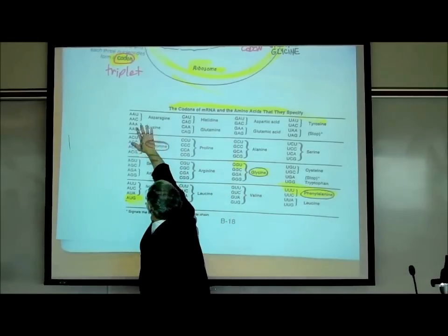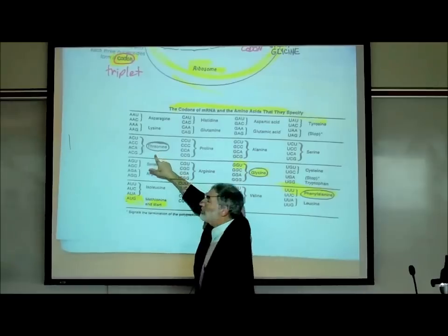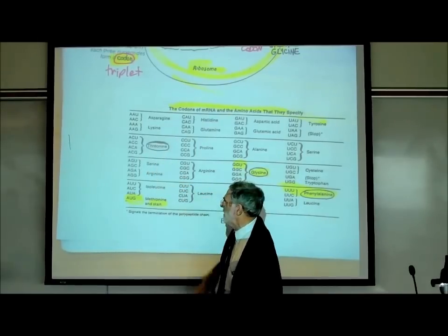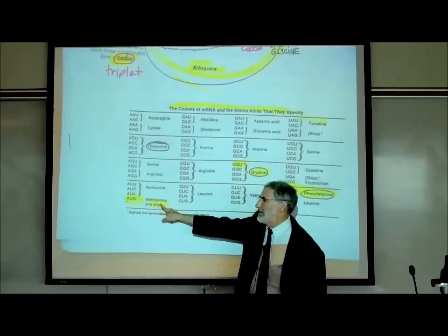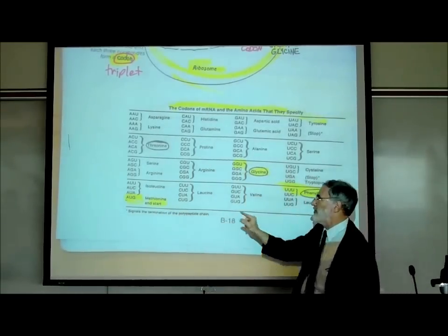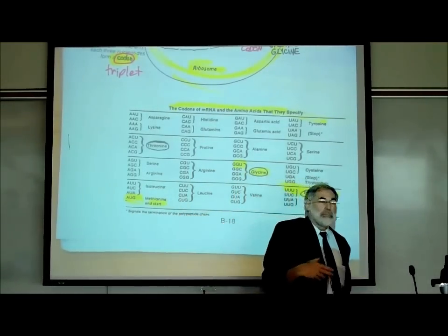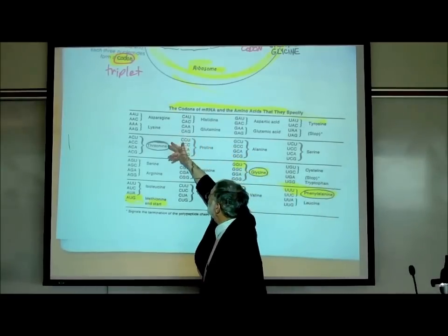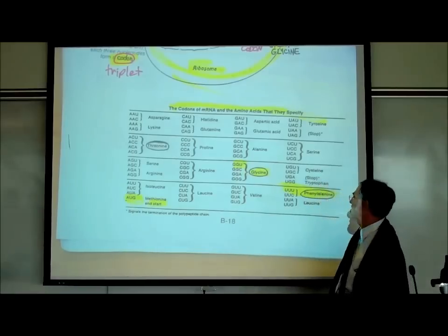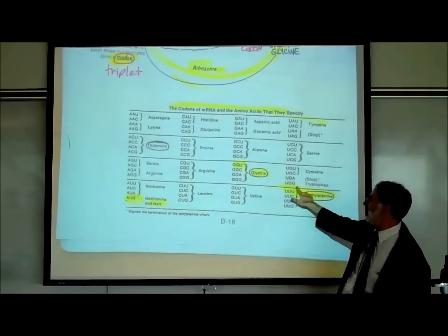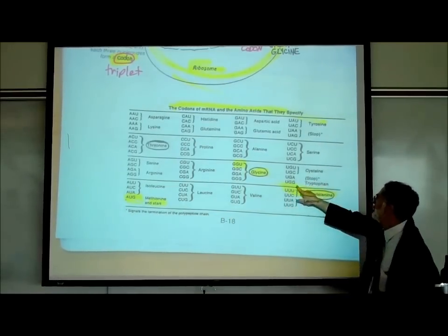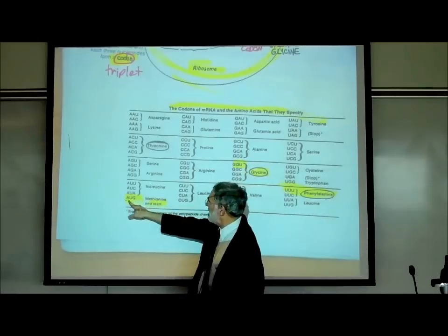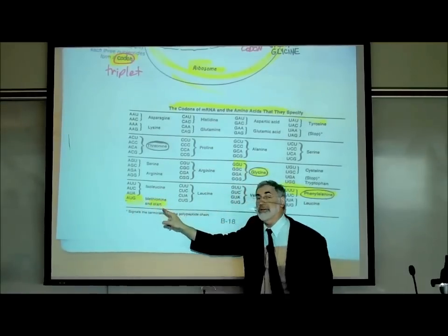Very interestingly, AUG is the only codon that codes for the amino acid methionine. Most amino acids have names ending in '-ine' — asparagine, lysine, threonine, serine, proline — with some exceptions like tryptophan. Tryptophan is coded by just one codon, and methionine also has just one codon. Both have no redundancy.